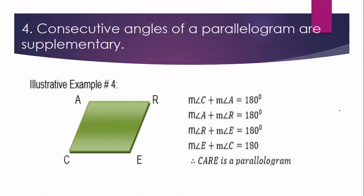Condition number four: consecutive angles of a parallelogram are supplementary. Supplementary angles means the sum of the two angles equals 180 degrees. In quadrilateral CARE, angle C plus angle A equals 180, angle A and angle R are supplementary, angle R and angle E are supplementary, and angle E and angle C are supplementary. All pairs of consecutive angles are supplementary, which guarantees that quadrilateral CARE is a parallelogram.